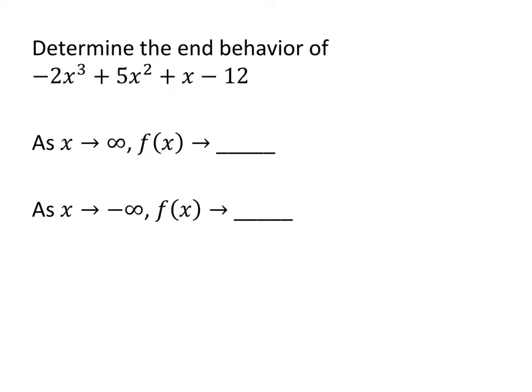Let's look at an example. We have the polynomial negative 2x cubed plus 5x squared plus x minus 12, and we want to know what happens as x goes to infinity — that is, what happens when x becomes a really, really big positive number. What we just learned is that the only thing that really matters for determining the end behavior is that leading term. We can ignore all the rest for the purpose of determining end behavior.